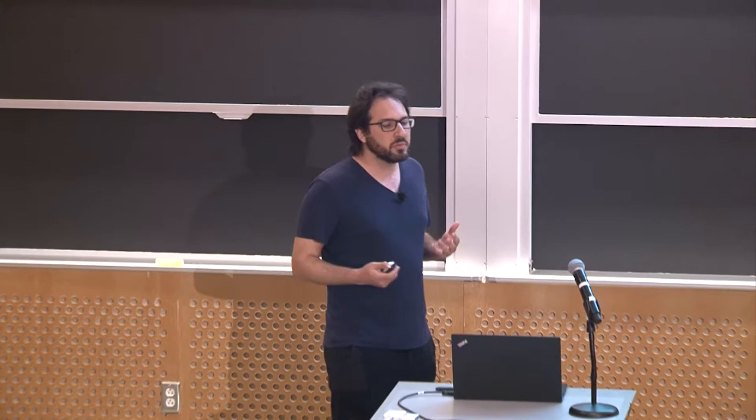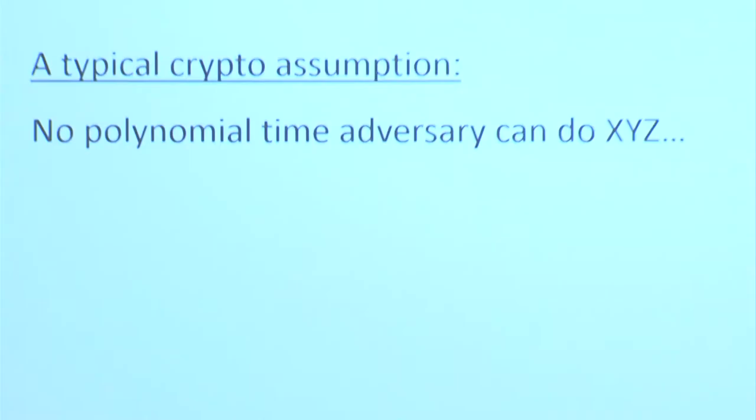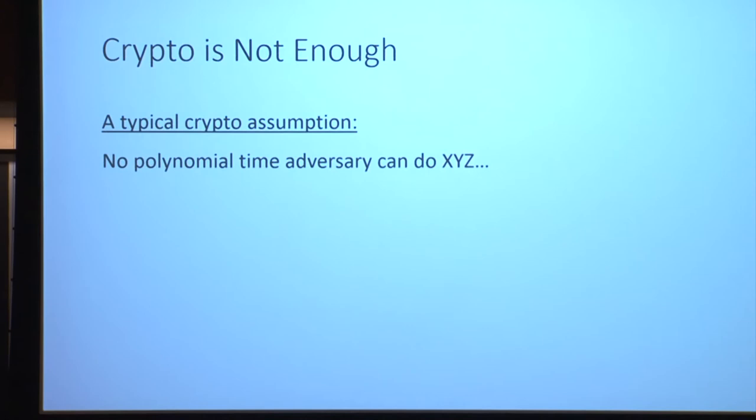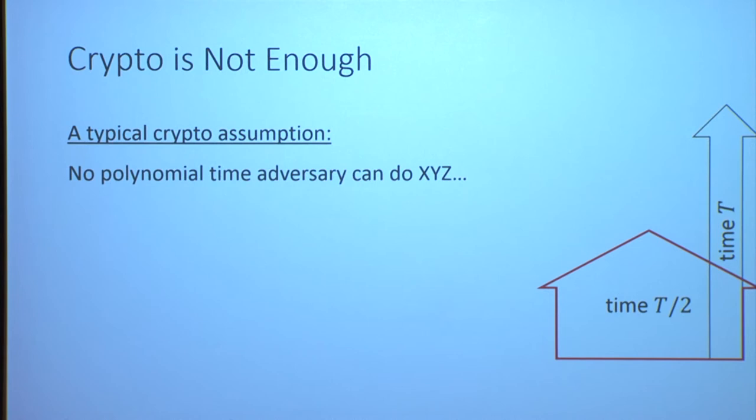Let me explain why cryptography alone is not enough. Essentially, any hardness assumption we use in cryptography says that no polynomial time adversary can do something — invert a function, distinguish encryptions of two messages. Our assumptions talk about adversaries that are efficient, but they don't care how efficient: whether the adversary runs in time t, or time t over 2, or how many processors it uses. In contrast, for an inherently sequential function, this is exactly what we need — something easy to do in time t but hard to do in time t over 2. So what we need is a much more fine-grained hardness assumption.